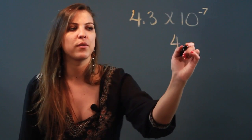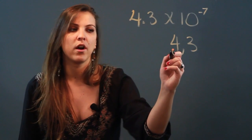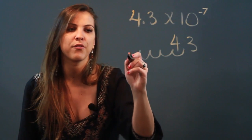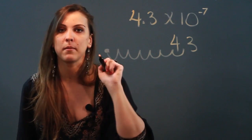So I'm going to take this number 4.3 and I'm going to put my pen on the decimal and I'm going to move 7 spaces: 1, 2, 3, 4, 5, 6, 7. And I'm going to put my new decimal point right there when I'm done counting.